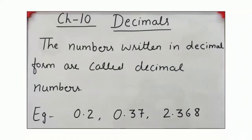The numbers written in decimal form are called decimal numbers. Example: 0.2, 0.37, 2.36, 8.